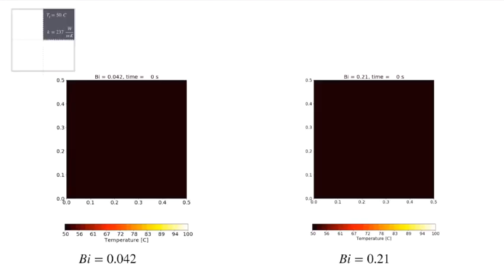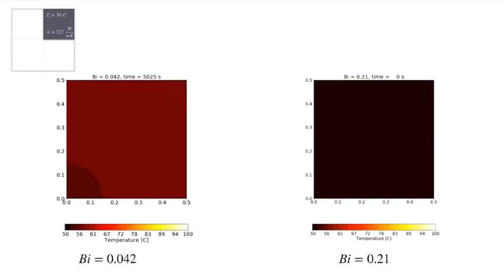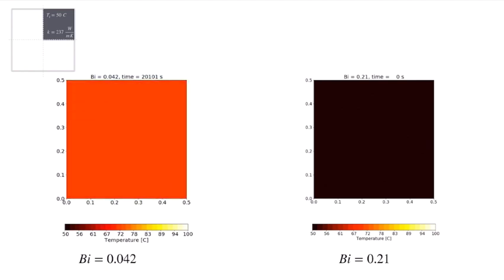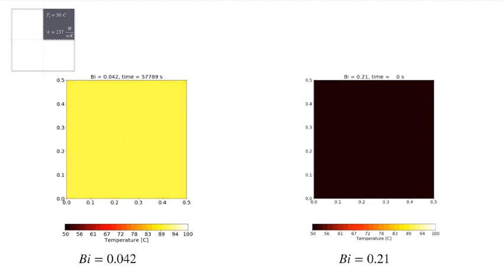So here's an animation starting at 50 degrees. We'll look first at the Biot number of 0.042, and at time 0, everything is at 50 degrees. And as we start heating that up, notice that the temperature is almost uniform across there. We're only ever seeing one contour line, so we're only changing a small amount of one contour gradation over here as it heats up from 50 to ultimately 100 degrees or close to 100 degrees.